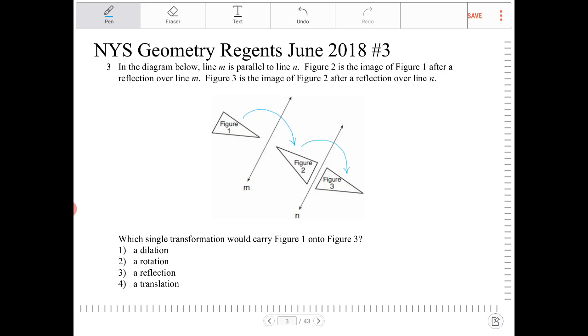Looking at these options here, a dilation has not occurred, because when we're dilating something, the figure will change size. When we are reflecting something, the reflections will not dilate. The objects are going to be congruent.